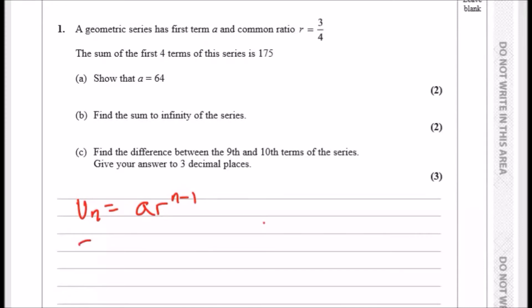We also need to know that the sum of the first n terms, which is a times 1 minus r to power n, all over 1 minus r. And lastly, we need to know the sum of infinity, so the sum of an infinite number of terms, which is just a over 1 minus r.